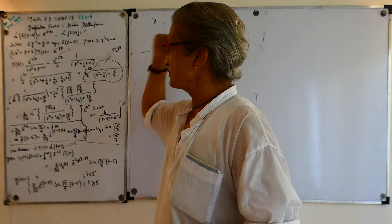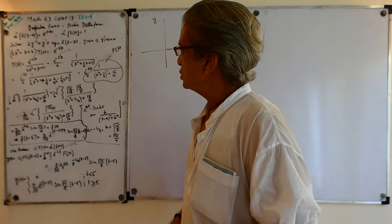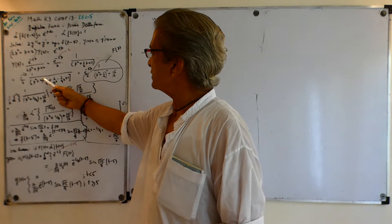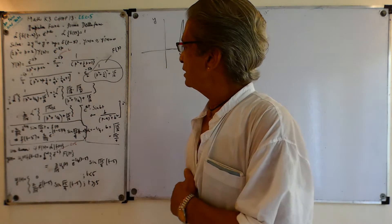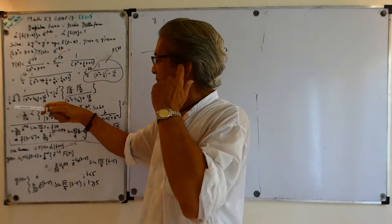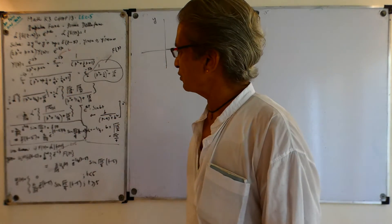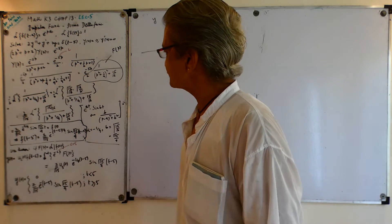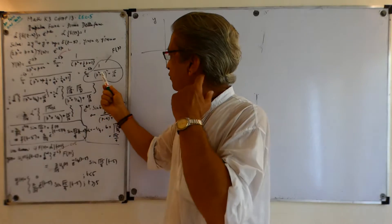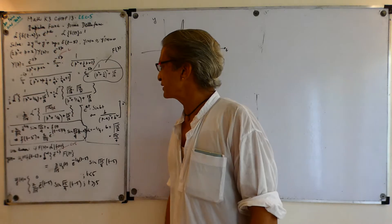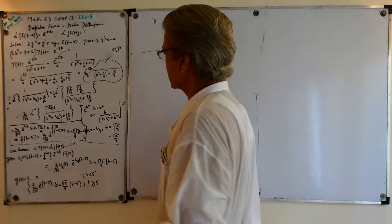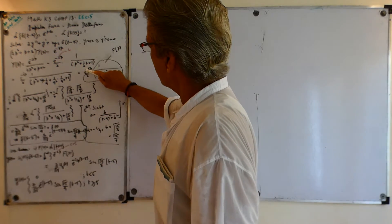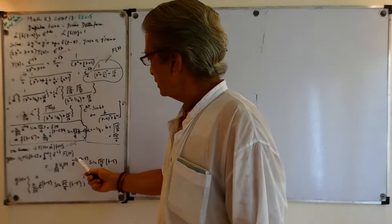Now I'm going to do exactly the same thing as before to get this into a recognizable form. I complete the square: P² + ½P + 1 becomes (P + 1/4)² + 15/16. So that's my F(P). I have something like e^(−5P) multiplied by some F(P). Whenever I see e^(−aP) · F(P), I know I'm going to apply the second shifting theorem.